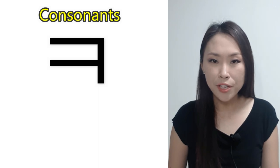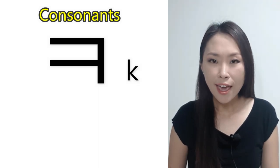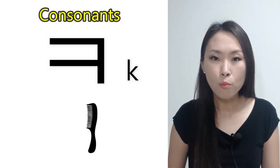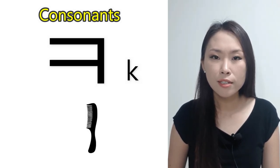The name of this consonant is 기역. The romanized letter for 기역 is K. 기역 sounds like the letter C in the word comb. 크, 크, 크, 크.